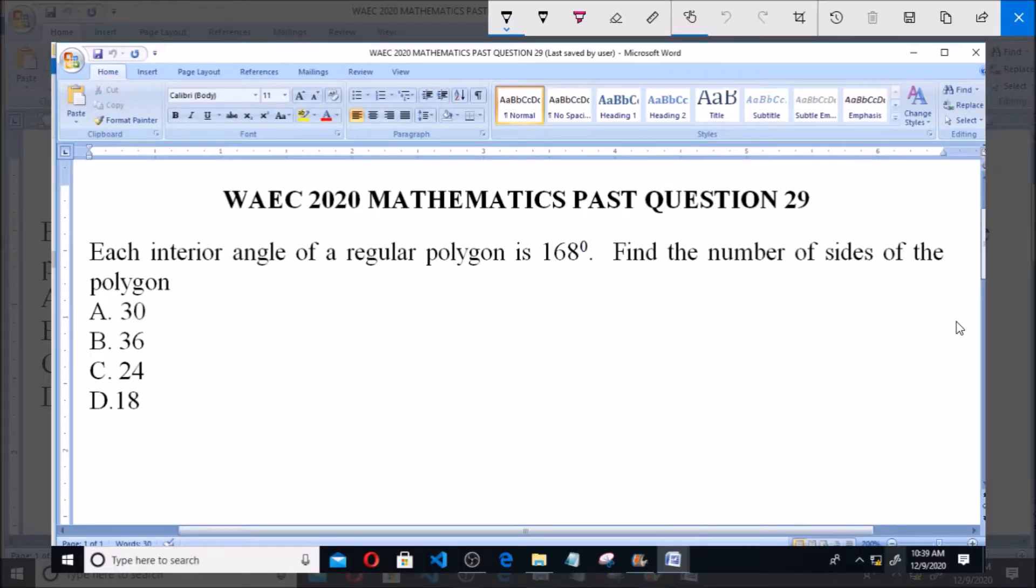Hello, good day and welcome. I will be answering WAEC 2020 Mathematics Past Question 29. Each interior angle of a regular polygon is 168 degrees. Find the number of sides of the polygon.